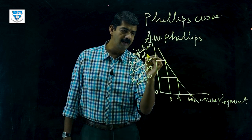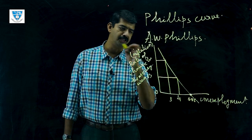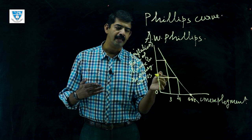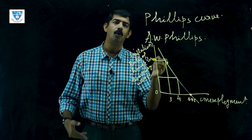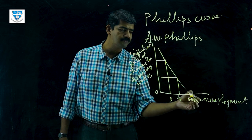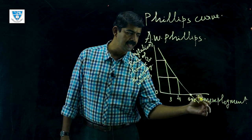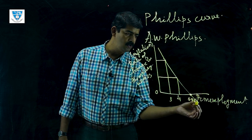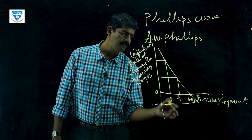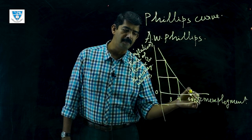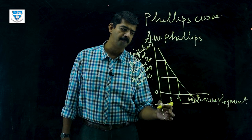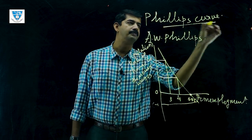He concluded that there is an inverse relationship between unemployment and inflation. If we reduce the rate of unemployment, we pay a cost in the form of rising money wages, which ultimately leads to inflation. On the other hand, if unemployment increases from 5.5% to around 7%, money wages will show a negative change. This relationship is what we call the Phillips Curve analysis.